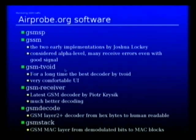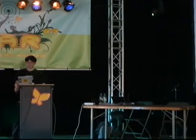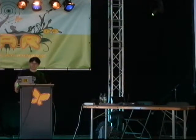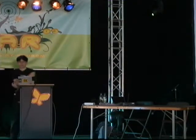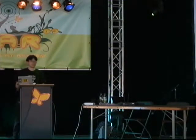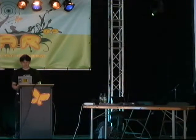What kind of software do we have in Airprobe? We have two programs called GSMSP and GSSM, which were the two earliest implementations — at least GSSM is by Joshua Lockheed. It's considered early alpha-level software, has many receive errors even with relatively good signal. By now almost nobody's using that software anymore, but it was a milestone in achieving a freely available open-source GSM receiver.